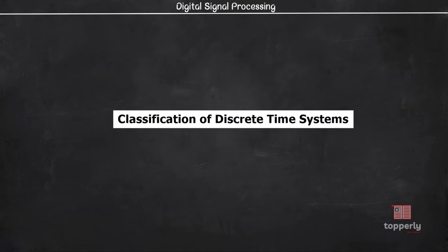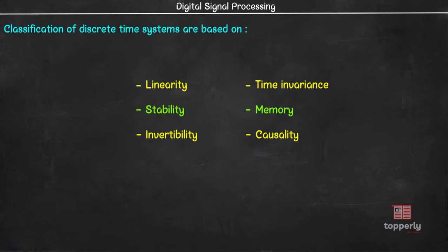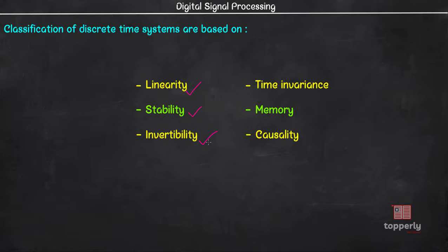Hey everyone, welcome back to DSP lectures. We were discussing the properties of discrete time systems in the last few videos and so far we learned about linearity and stability. Continuing from that, in this lecture we will learn about the next property, which is invertibility. This lecture will be a little longer as we will also see some specific examples which will help you understand the concept better. So, let's start our lecture.